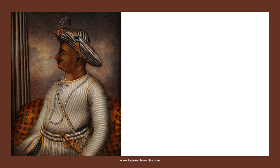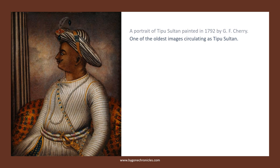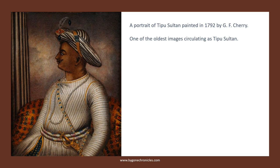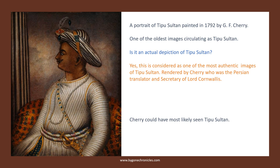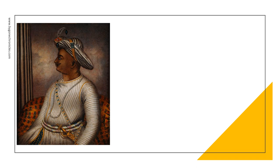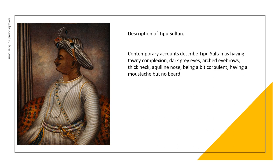So we next move to the painting of Tipu Sultan by G.F. Cherry, rendered in 1792, one of the oldest images circulating as Tipu Sultan. Is it an actual depiction of Tipu Sultan? Yes, this is considered as one of the most authentic images of Tipu Sultan, rendered by Cherry, who was Persian translator and secretary of Lord Cornwallis. The painting was gifted by Cornwallis to Tipu Sultan's mother and later gifted back from his son Prince Olam Mohammed to the East India Company. Cherry could have most likely seen Tipu Sultan, and being with the family of Tipu Sultan adds credence to this image. The description of Tipu Sultan also matches the painting — contemporary records describe Tipu Sultan as having a tawny complexion, dark grey eyes, arched eyebrows, an aquiline nose, and having a moustache but no beard.